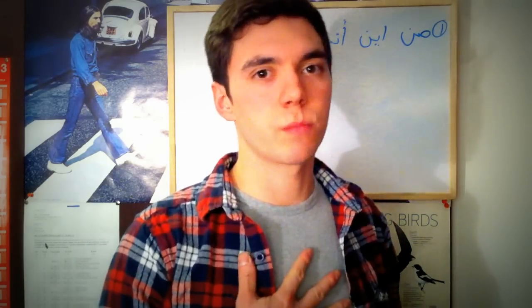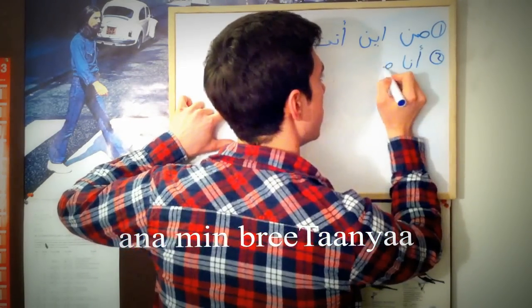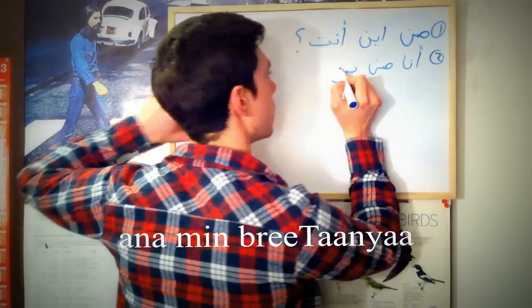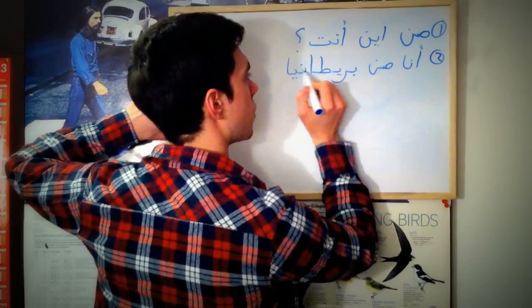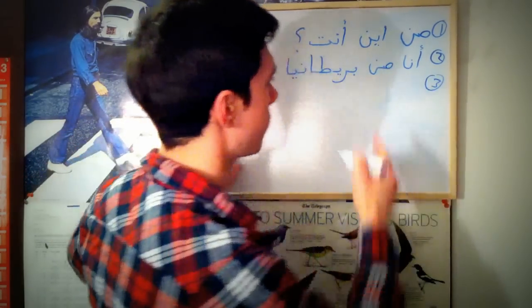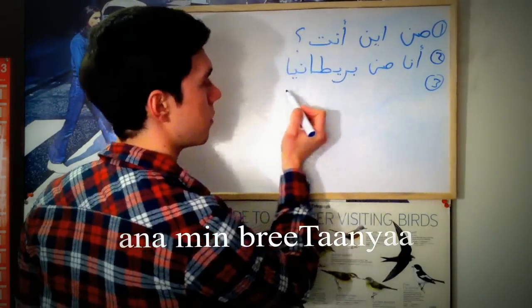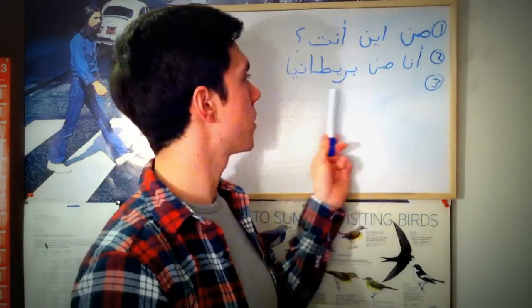Okay, next thing — I'm gonna say it and you're gonna guess it: ana min britaniya. Obviously that means 'I'm from Britain'. Ana min britaniya. Or ana min amreekiya, or wherever you're from — ana min almaniya, Germany, France. We don't need to go into countries right now. Ana min britaniya — I'm going to write that as well, number two.